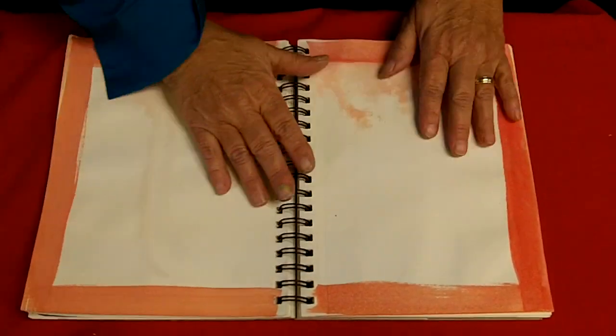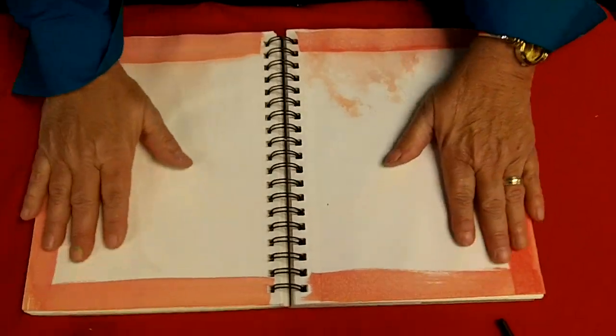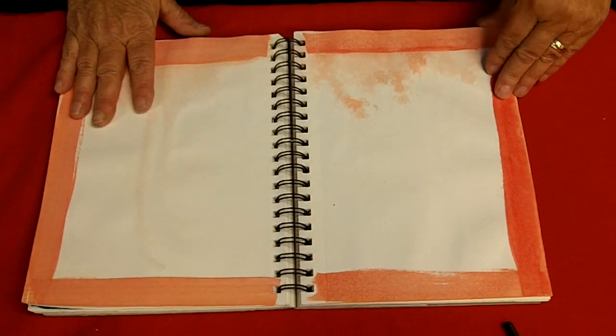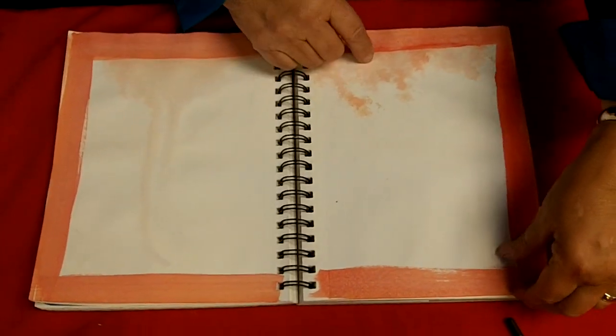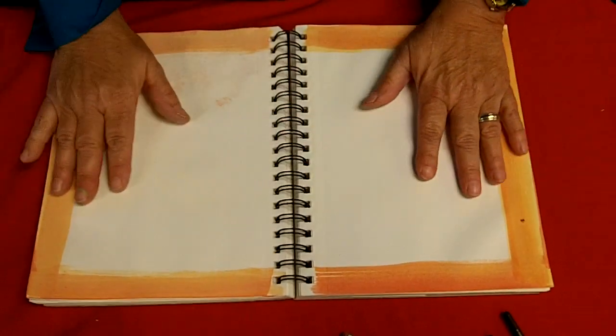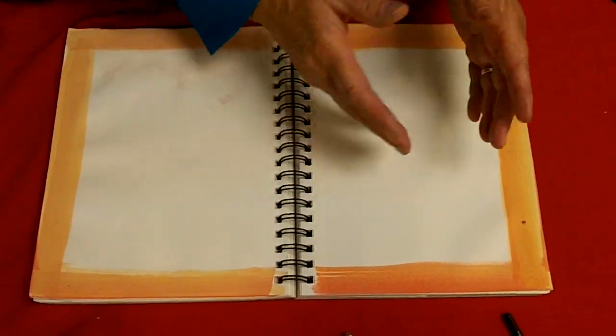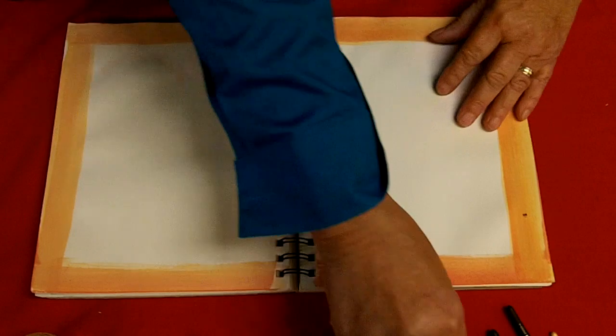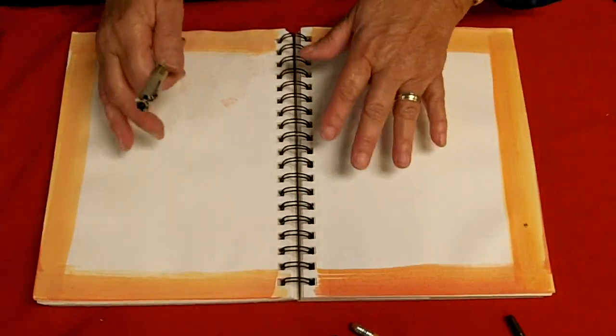So now that I have my border done, I'm going to need to let that dry before I draw on that page. So I'm just going to go on to another page. Now this one I've already done and let dry. And I sort of like the way that color bled out. It looks creative to me.